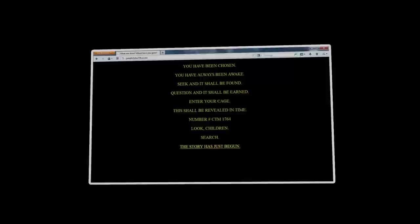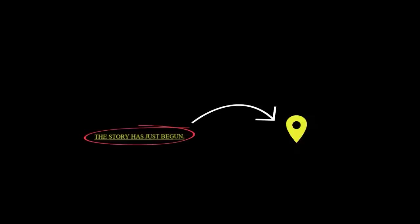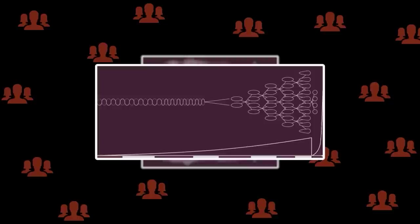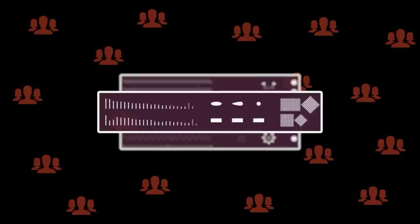Upon following the link, those who dared would be directed to a site with more sinister messages, such as, You have always been awake. Enter your cage, and the story has just begun. The last of those contained another link, which pointed to the address of the original author of the message. Over time, the Onion site was updated and modified to include more cryptic puzzles. And as an increasing number of people started to investigate and decode them, the site continued to develop and progress.